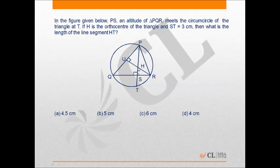If H is the orthocenter—remember H is not the circumcenter, H is the orthocenter—that is, H is the meeting point of all the altitudes of this triangle, and ST is 3.